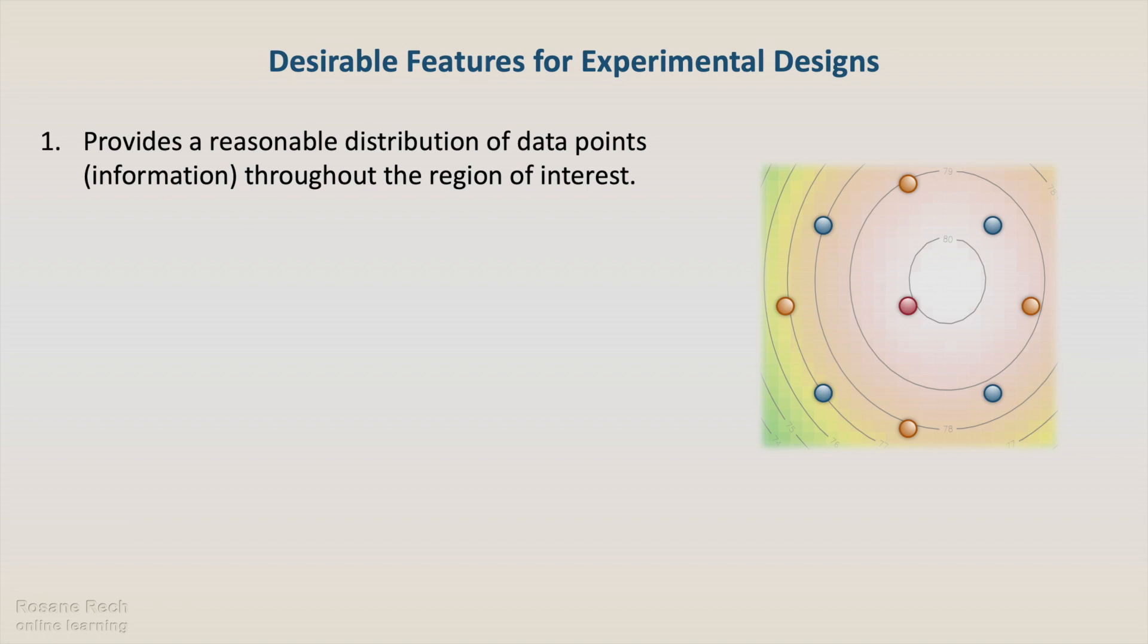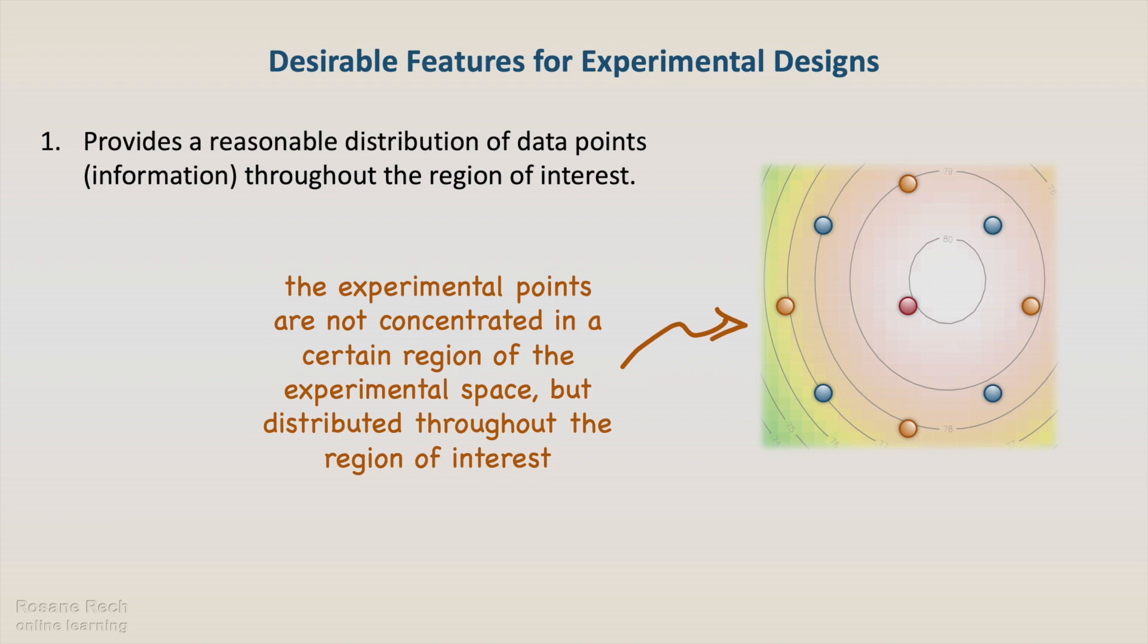First, a good design has to provide a reasonable distribution of data points of information throughout the region of interest. A suitable distribution means that experimental points must not be concentrated in a particular area of the experimental space, but they have to be distributed all over the region of interest.